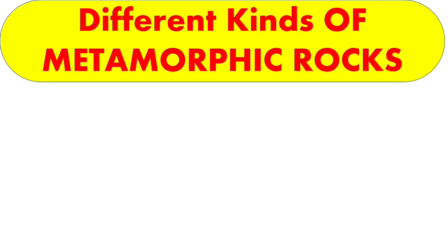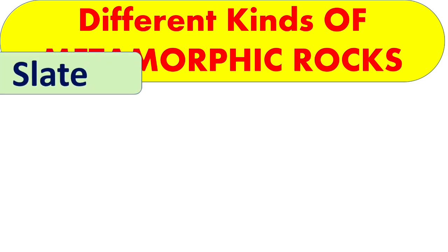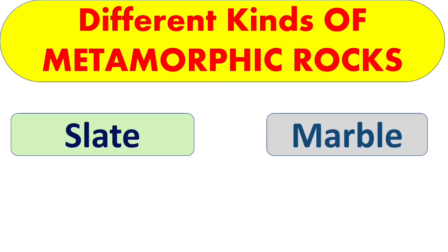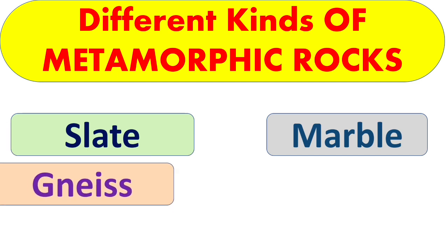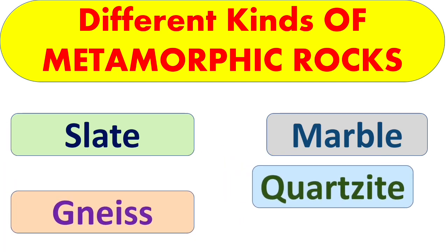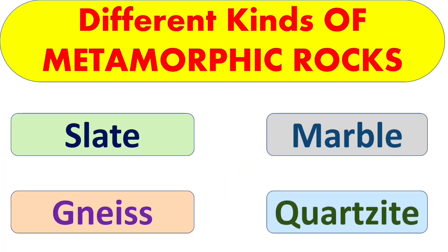Now let us see some different kinds of metamorphic rocks. They are slate, marble, gneiss, and quartzite. Let us look at each of these metamorphic rocks in detail.